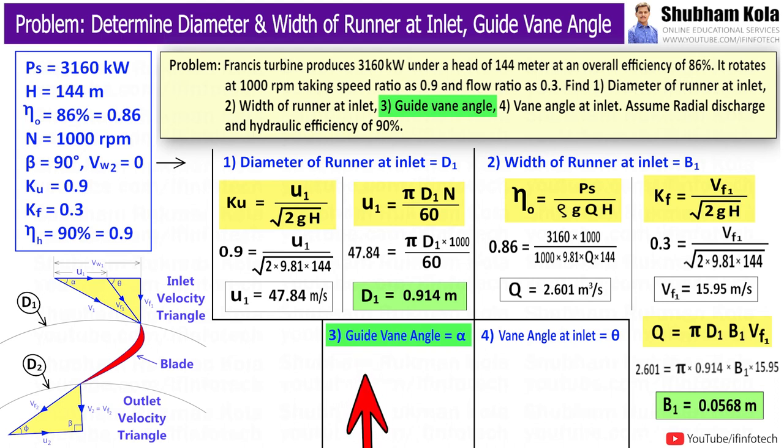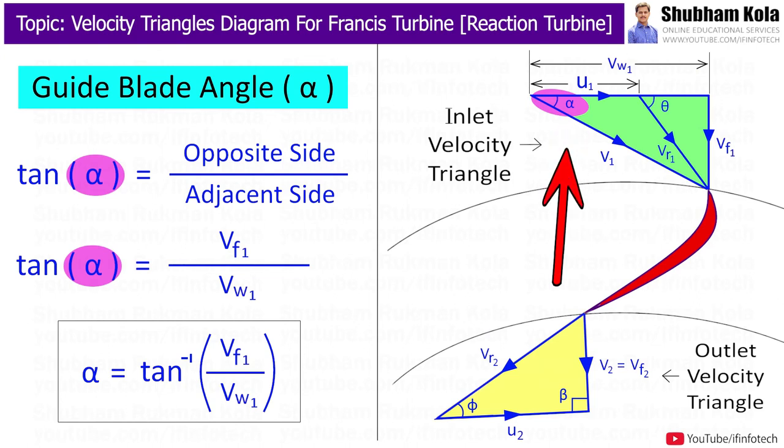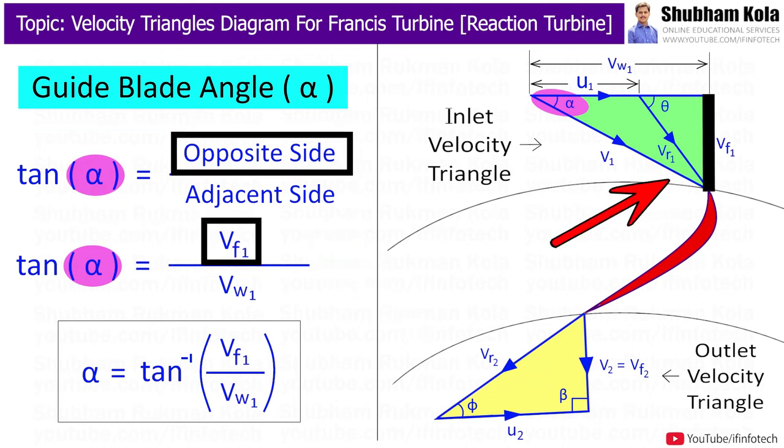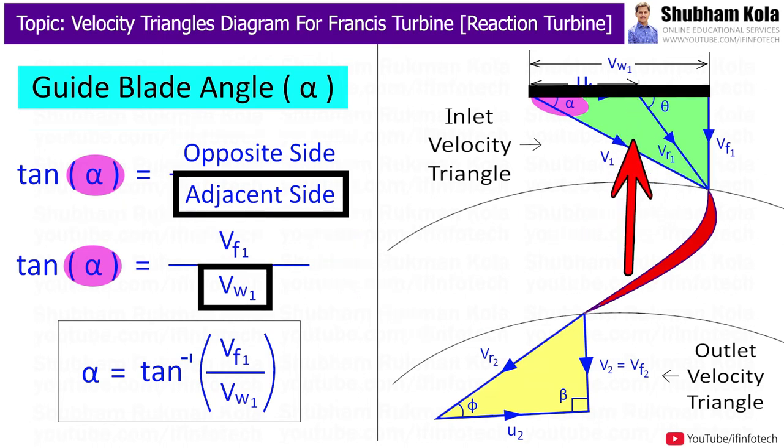Now, next we need to calculate for value of guide vane angle, i.e. α. Let's look at the figure. Consider the turbine blade as shown in figure, where α is angle made by absolute velocity of jet V1 at inlet. That means, to find guide vane angle α, we take inlet velocity triangle from the given figure. As we have studied in previous video, from inlet velocity triangle, tan α = Vf1 / Vw1, where opposite side is Vf1 and adjacent side is Vw1.